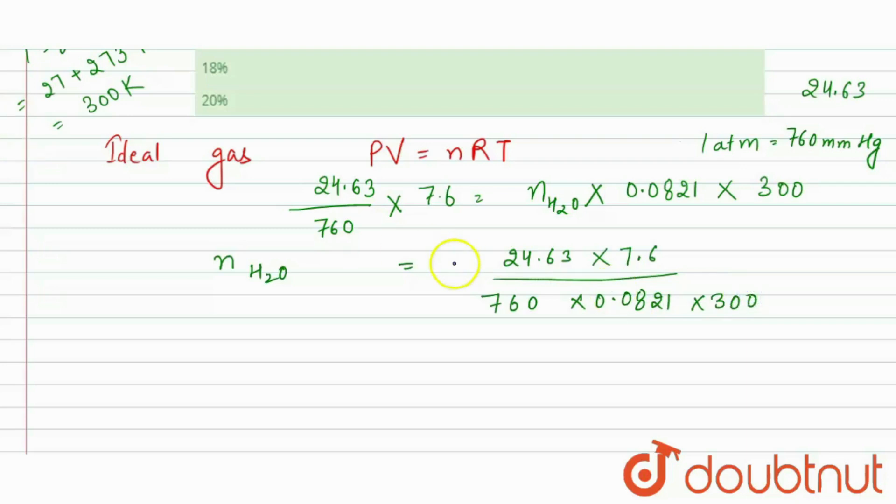So if we solve this whole term we will get the number of moles of water is equal to 0.01.